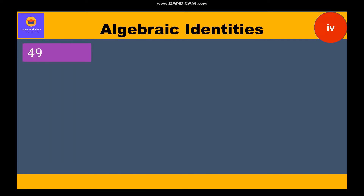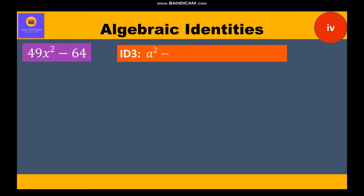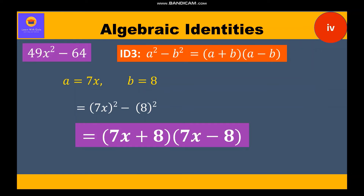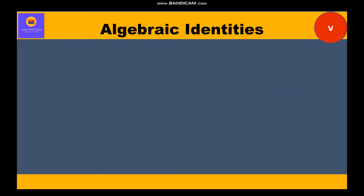Question 4: factorize 49x² - 64. Both terms are perfect square numbers and there are only two terms, so it is clearly identity 3 where a = 7x and b = 8. Substituting into identity 3, we write (7x)² - (8)², giving two factors: (7x + 8)(7x - 8).